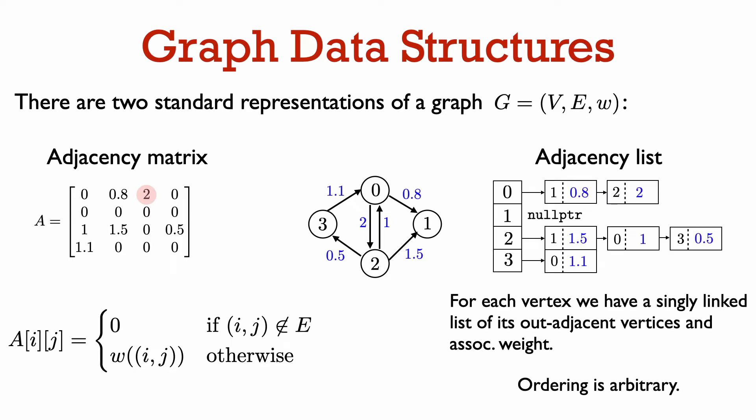The second standard data structure to represent a graph is called an adjacency list. An adjacency list is an array of singly linked lists, one for each vertex in the graph. The linked list associated with vertex i has all the vertices out-adjacent to vertex i and the weight of the edge between them. In this example, the linked list for vertex 2 contains vertex 1 with associated weight 1.5, vertex 0 with associated weight 1, and vertex 3 with weight 0.5. The nodes in this linked list can appear in any order, and note that we only have nodes associated with the outgoing edges, not the incoming ones. The list for vertex 1 is just an empty list because vertex 1 has no outgoing edges, so the entry of the array corresponding to vertex 1 is just a null pointer.